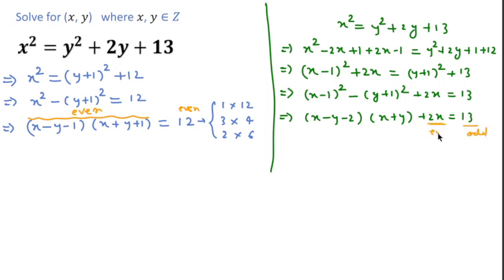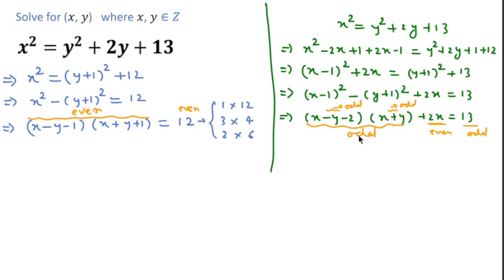Since 2x is even, the remaining term must be odd — because odd plus even gives odd, otherwise not. And since the product of these two expressions is odd, this is only possible when both expressions are odd, because odd times odd gives odd, otherwise not.